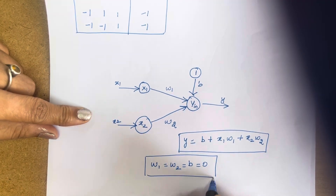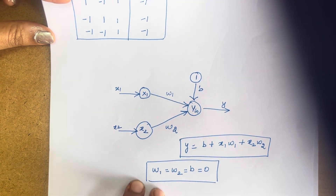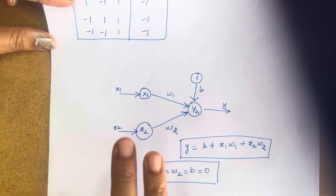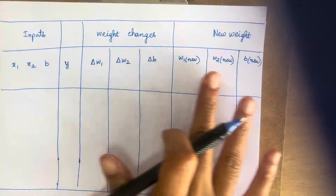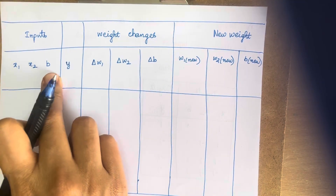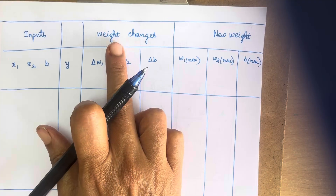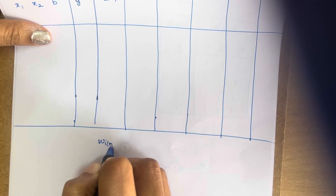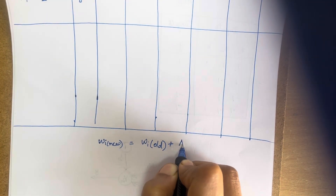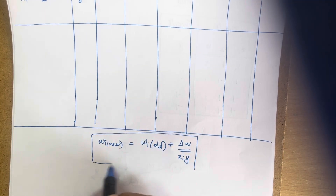The main purpose of this network is to train it using the HEP network and find the values of W1, W2, and B. We form a table consisting of inputs X1, X2, bias, and the output Y. The formula for the HEP network is: the new weight W1_new equals W1_old plus the change in weight, where the change in weight delta_W equals Xi multiplied by Y.